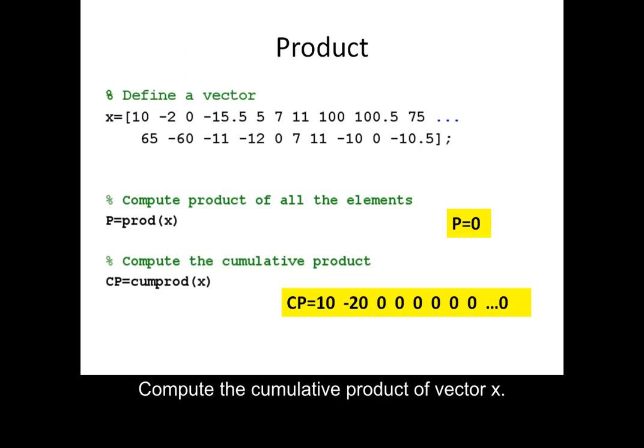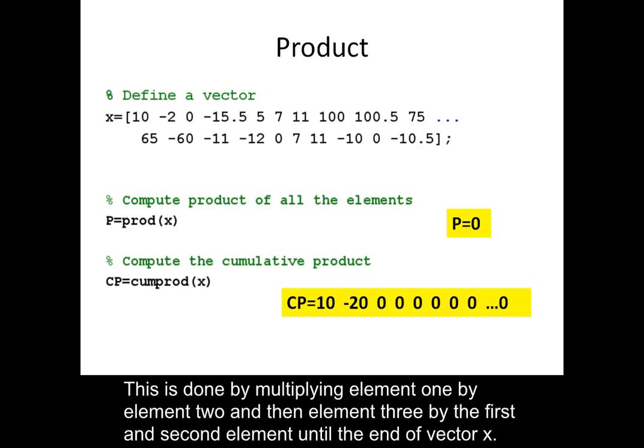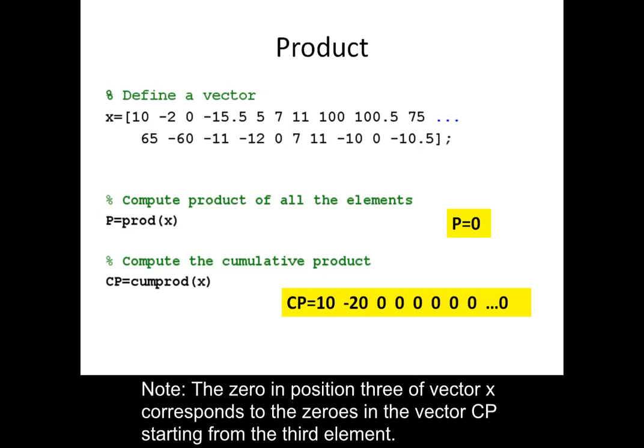Compute the cumulative product of vector x. This is done by multiplying element 1 by element 2, and then element 3 by the first and second element, until the end of vector x. Note: the zero in position 3 of vector x corresponds to the zeros in vector cp starting from the third element.